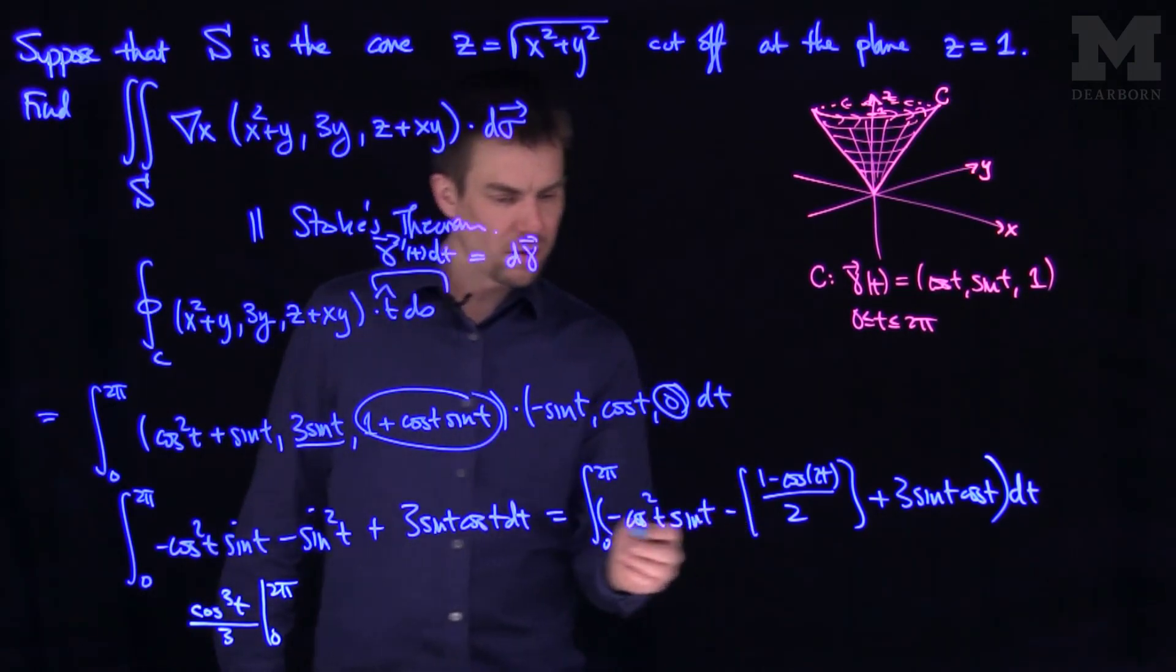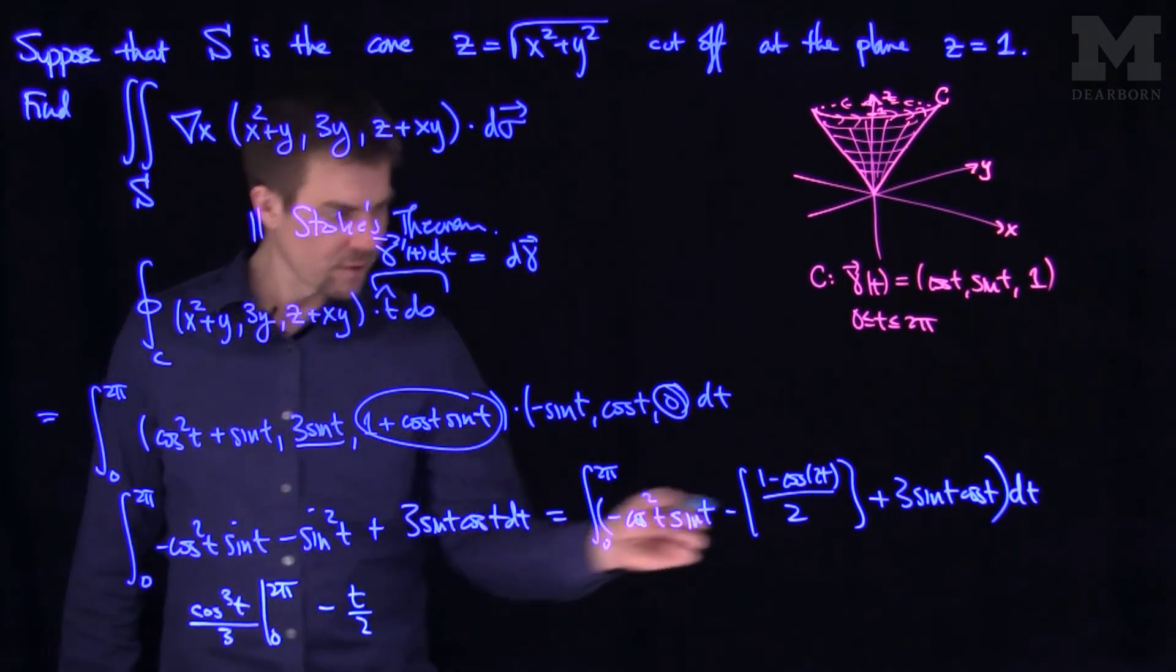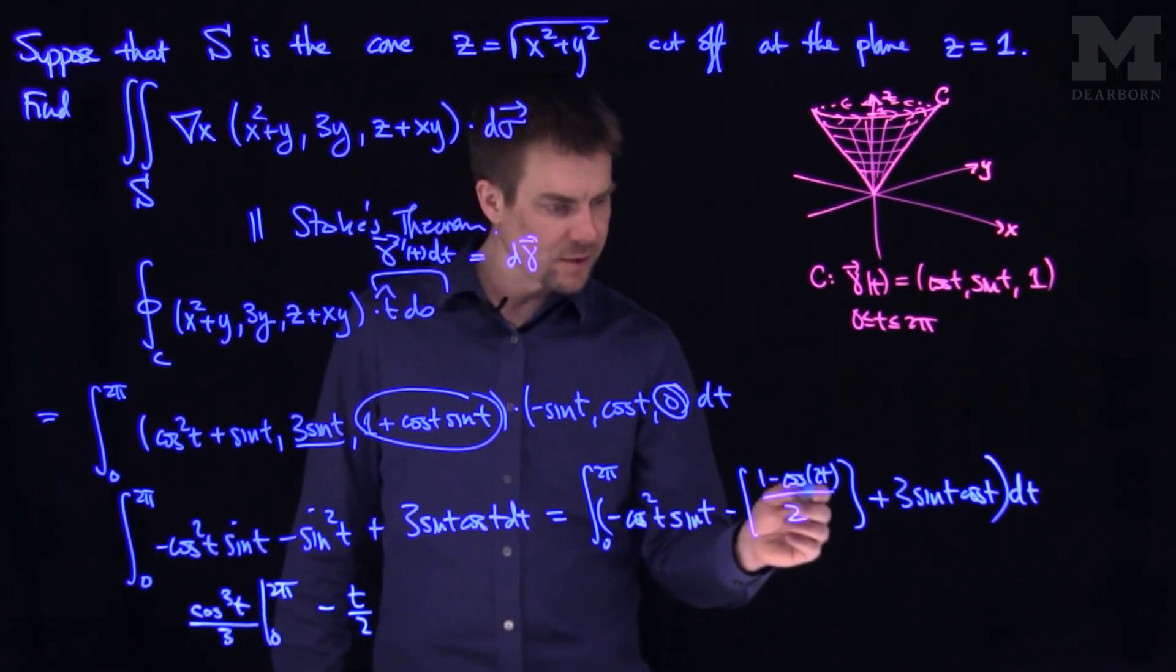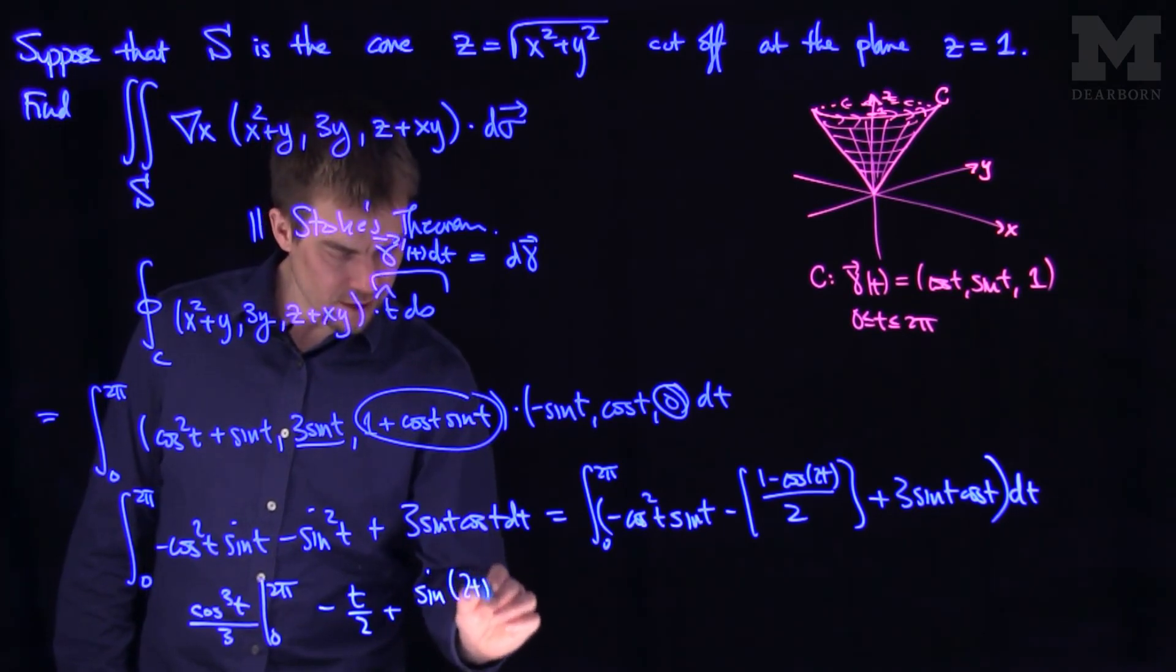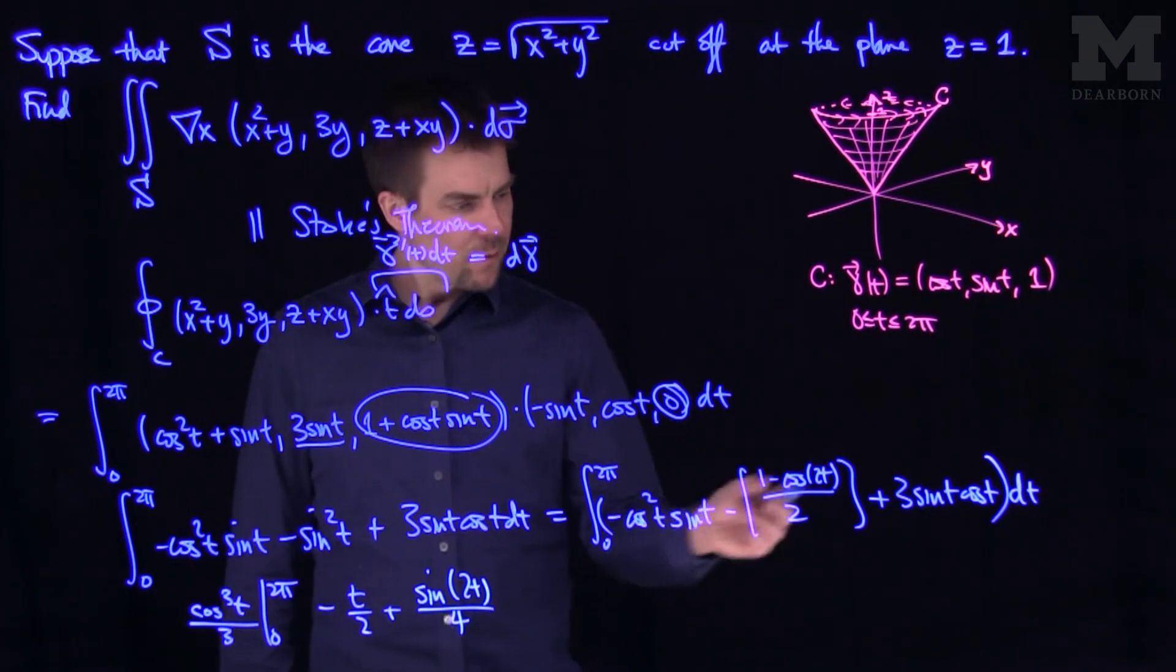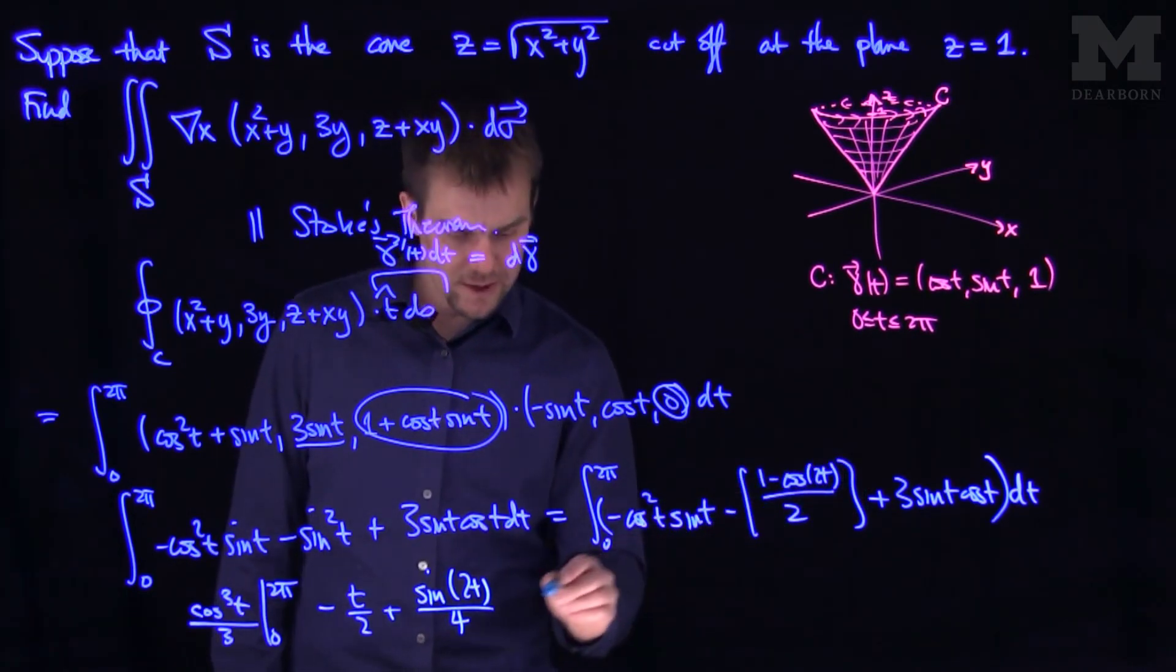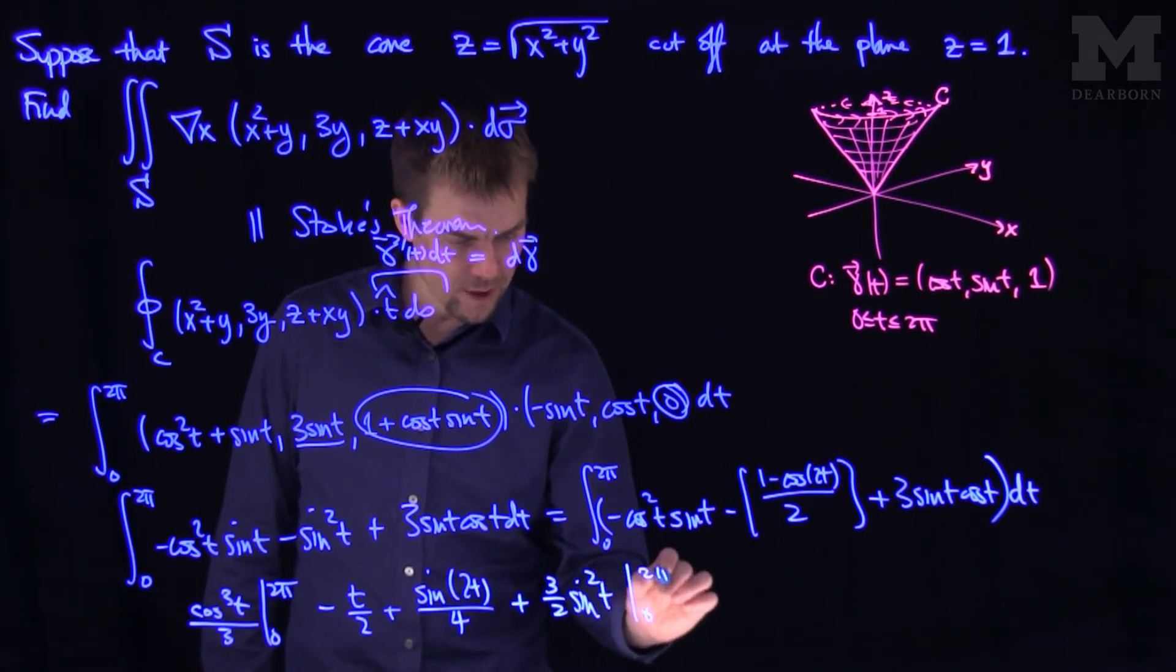Then this next term over here is going to be negative T over 2 for this term. Then we have positive cosine 2T over 2. That's going to integrate to sine of 2T over 4. And then we have this 3 sine T cosine T. That's going to integrate to 3 halves sine squared of T from 0 to 2 pi.